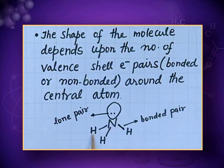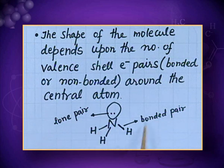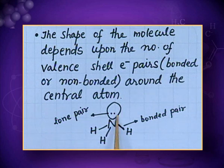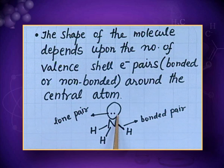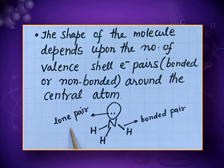In the case of ammonia, the bond between N and H is known as the bonded pair. But you can see an electron pair over the nitrogen atom. This electron pair, which is not participating in any type of bond formation, is known as the lone pair. The total number of these electron pairs will decide the shape of the molecule.